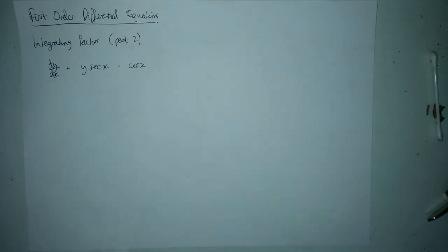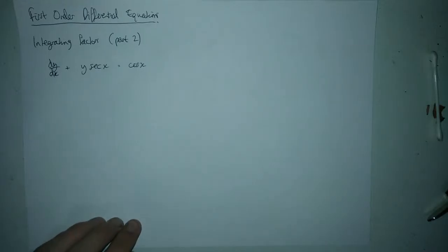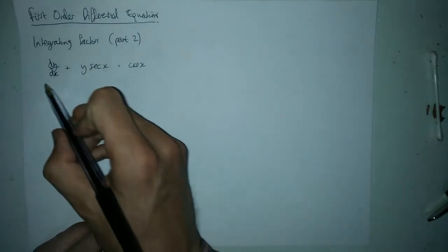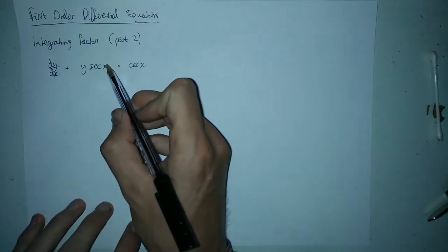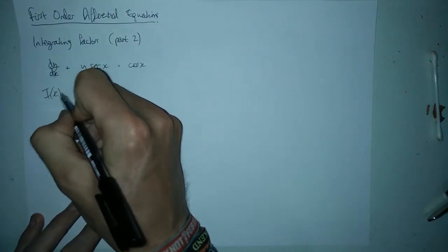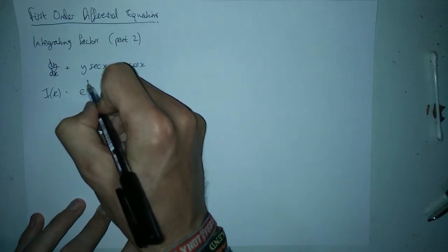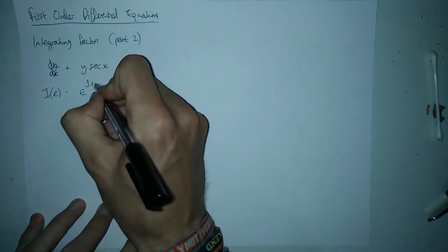In this video we're going to look at some more first order differential equations, still looking at integrating factors — just a few more examples so you've seen a few more things before you have a go. This one has a trigonometric function sec x, which is 1 over cos x. We're going to work out the integrating factor, starting with e to the integral of sec x — the term next to the y.